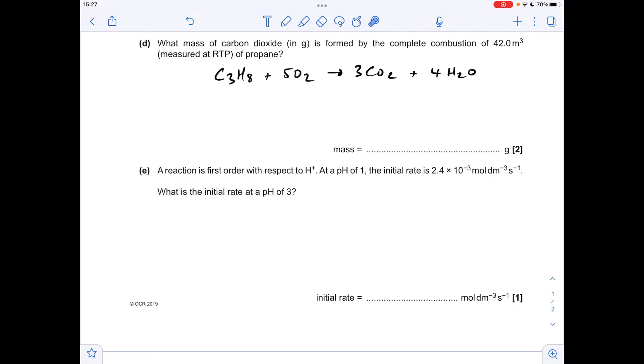Part d: What mass of carbon dioxide in grams is formed by the complete combustion of 42 cubic meters of propane, measured at RTP? First thing we need to do is put the meters cubed into decimeters cubed, so 42 times 10 to the 3, divide by 24 (the molar gas volume), and we get 1750 moles of propane. Apply the mole ratio, so we're going to get three times as many moles of carbon dioxide, and then we just need to multiply by the Mr of CO2, which is 44, to convert that to grams, which gives an answer of 231,000 grams.